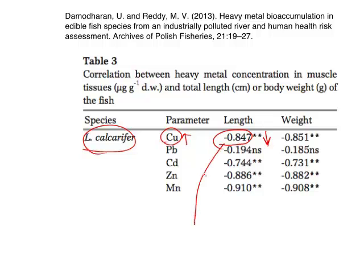The value of the correlation coefficient of minus 0.847 is actually quite strong — it's close to minus 1. So that means that the relationship between the copper concentration and the average length of fish is quite strong. For this particular article we don't have a scatter plot, so we must assume that the authors have examined the relationship between these two quantitative variables and found that it's approximately linear.